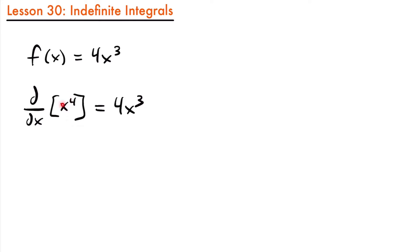So this is the derivative of x to the fourth power, which is also our function. We call x to the fourth power the antiderivative of 4x cubed. It is the opposite of a derivative. If 4x cubed is the derivative of x to the fourth power, then x to the fourth power is the antiderivative of 4x cubed. We like to denote the antiderivative with a capital F(x), which will be equal to x to the fourth power.